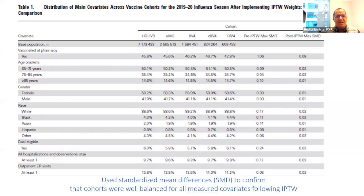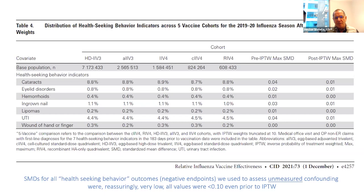We see the distribution of main covariates across vaccine cohorts for the five different vaccines in the study. Following inverse probability of treatment weighting, the differences were very small using standardized mean differences. We also, in table four of the same study, used a distribution of health-seeking behavior indicators—negative outcomes—among the five vaccine cohorts. The use of medical services for cataracts, eyelid disorders, hemorrhoids, ingrown nail, lipomas, urinary tract infection, and wound of hand or finger were very close between the different cohorts for the different influenza vaccines, with standardized mean differences all under 0.1.